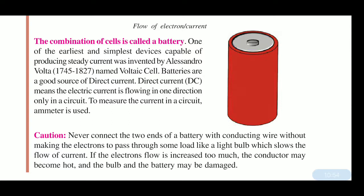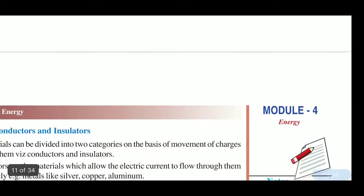Never connect the two ends of the battery with a conducting wire without making the current pass through some load, like a light bulb, which slows the flow of current. If the current flow is increased too much, the conductor may become hot and the battery may be damaged. We should always put some appliance like an LED bulb or a small motor in the circuit.